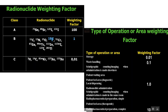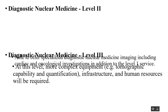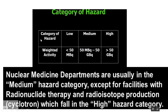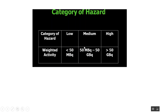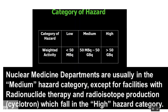The hazard categories are: low hazard — weighted activity less than 50 MBq; medium hazard — 50 MBq to 50 GBq; high hazard — greater than 50 GBq. Most nuclear medicine departments fall in the medium hazard category, except facilities with radionuclide therapy and radiopharmaceutical production like cyclotrons, which fall in the high hazard category.